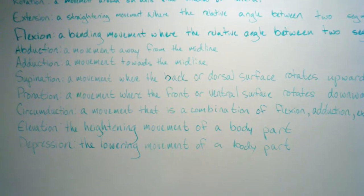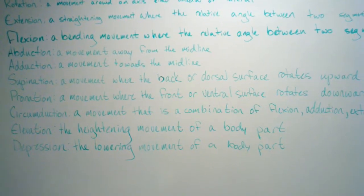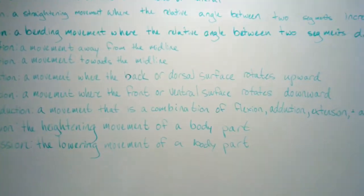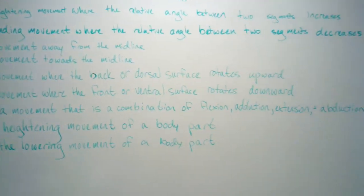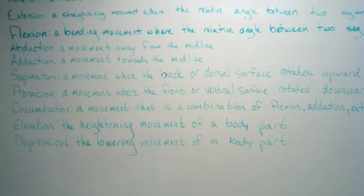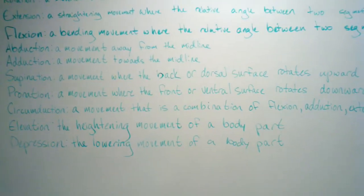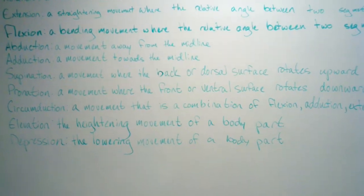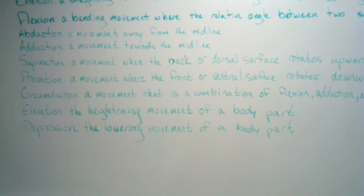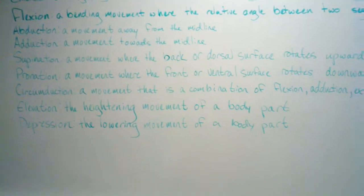Circumduction is a movement that is a combination of flexion, abduction, extension, and adduction. Elevation is the heightening movement of a body part. Depression is the lowering movement of a body part.